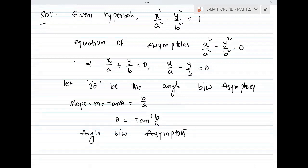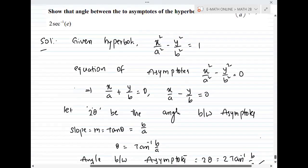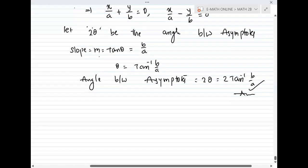Angle between asymptotes equals 2θ, so 2 tan inverse b/a. This is the first result.